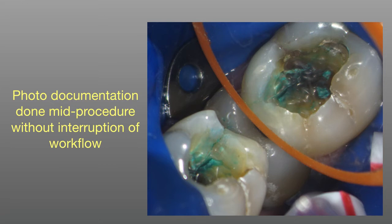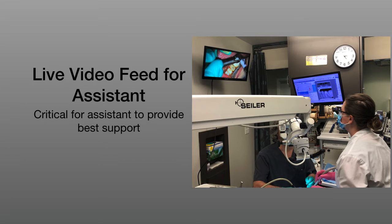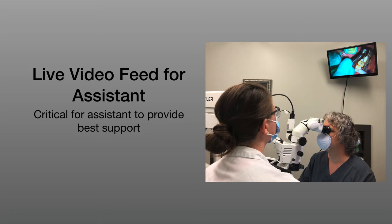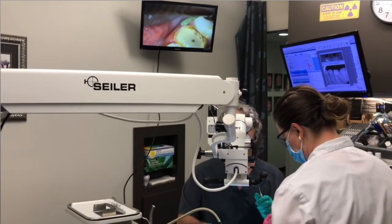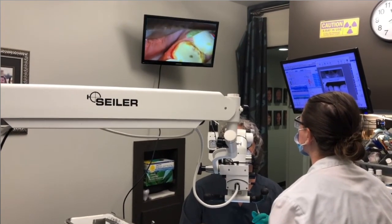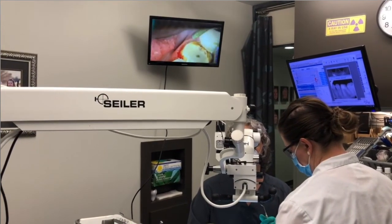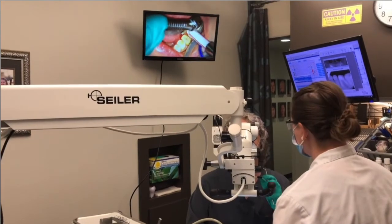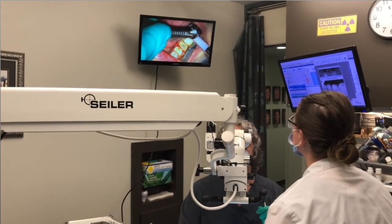We don't have to say 'go get the camera, get the photo mirrors, move the microscope out of the way, take the photo.' We just reach up and click the shutter on the camera — no extra flash needed. The live video feed for the assistant is critical to provide the best support. This video feed allows our assistants to see what we see through the scope. This Seiler scope has a focus that's easy for the assistant to adjust, the image is extremely clear, and it also improves the ergonomics of the assistant.